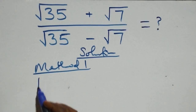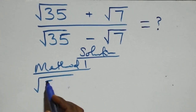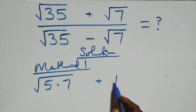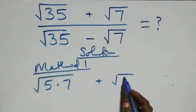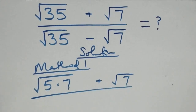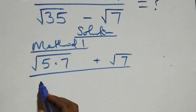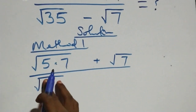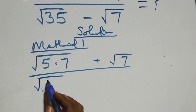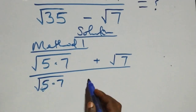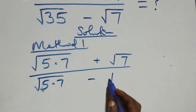we can separate root thirty-five as root five times seven, giving us: root five times seven plus root seven in the numerator, divided by root five times seven minus root seven in the denominator.